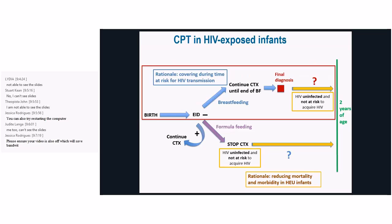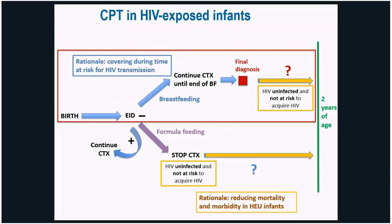Let's turn to children who are HIV-exposed but uninfected. The rationale for initiating cotrimoxazole prophylaxis in HIV-exposed infants is to cover the period of time when there is risk for HIV transmission. In breastfeeding populations this period is much longer, and in non-breastfeeding populations it is shorter. Strong recommendations were made around cotrimoxazole prophylaxis for this period. We also have data on the added benefit of extended prophylaxis beyond the period of risk for protecting infants from malaria and severe bacterial infections.